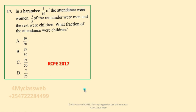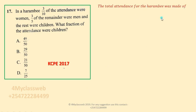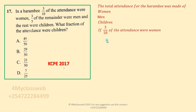What fraction of the attendance were children? Now you realize that the total attendance for the harambee was made up of three categories: women, men, and children. We are told that three tenths of the attendance were women.